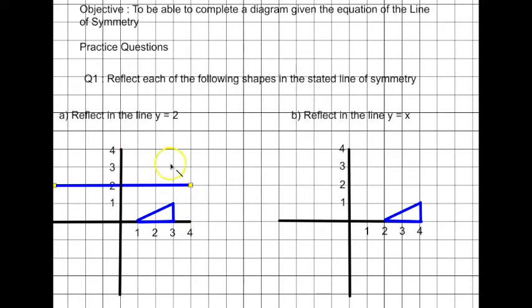So it doesn't matter what x is, y is always going to equal 2. That's why we get this line here, y equals 2, as this horizontal line going across here.